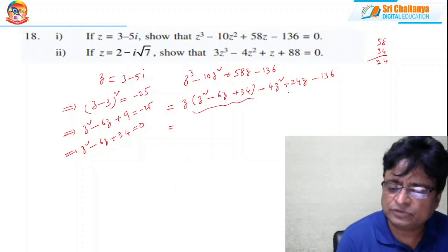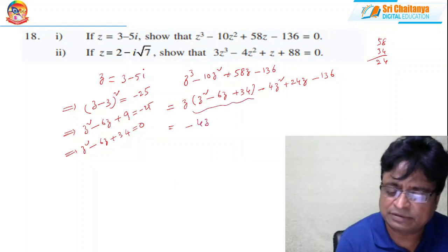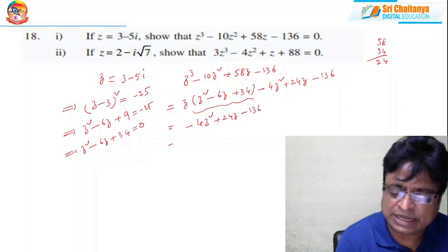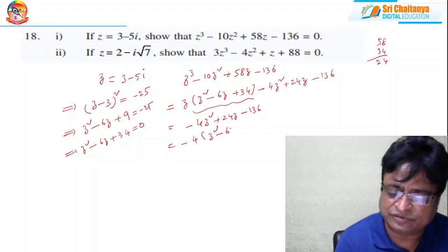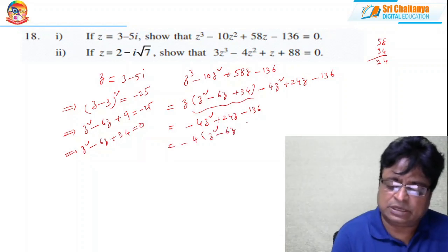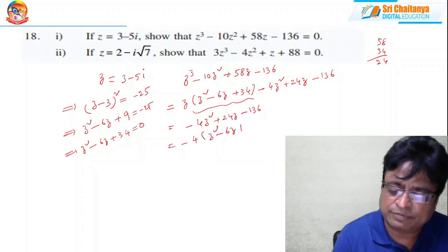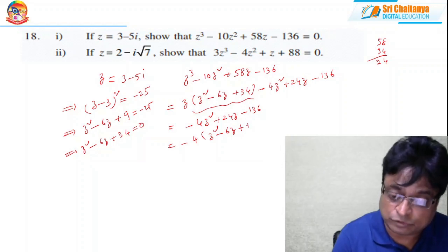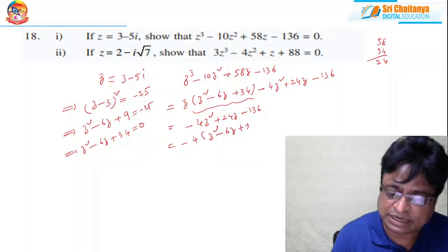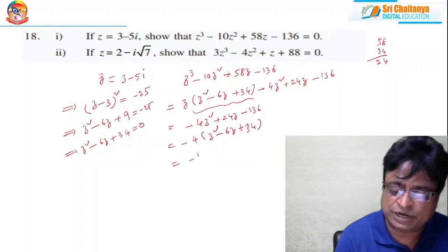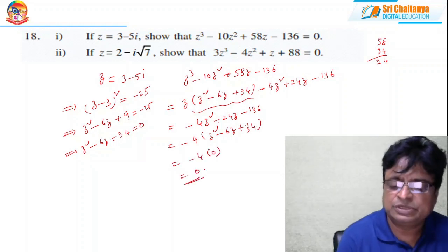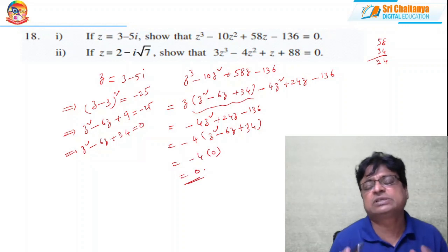From −4z² + 24z − 136, take −4 as common: −4(z² − 6z + 34). Since z² − 6z + 34 = 0, both groups are zero, giving −4 × 0 = 0. So the entire expression equals 0. That is the way of solving this problem.